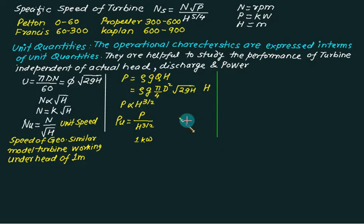Third case we will define the unit discharge quantity. Discharge is given by area multiplied by velocity. Area we can write as π by 4 d square and velocity equal to under root 2gh.